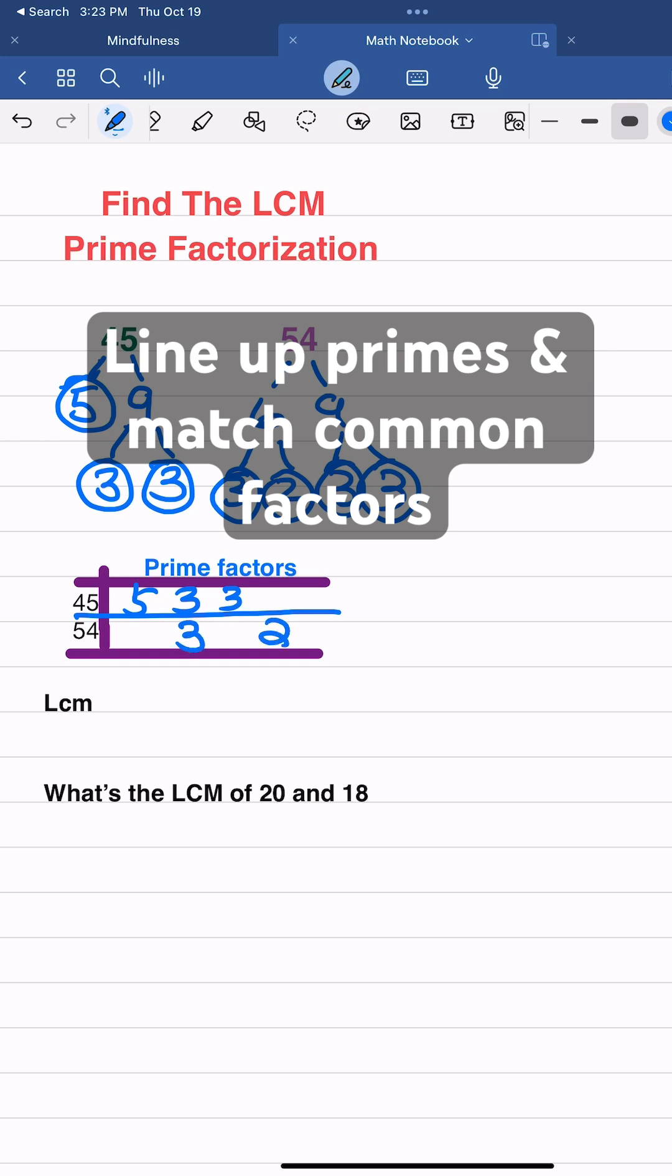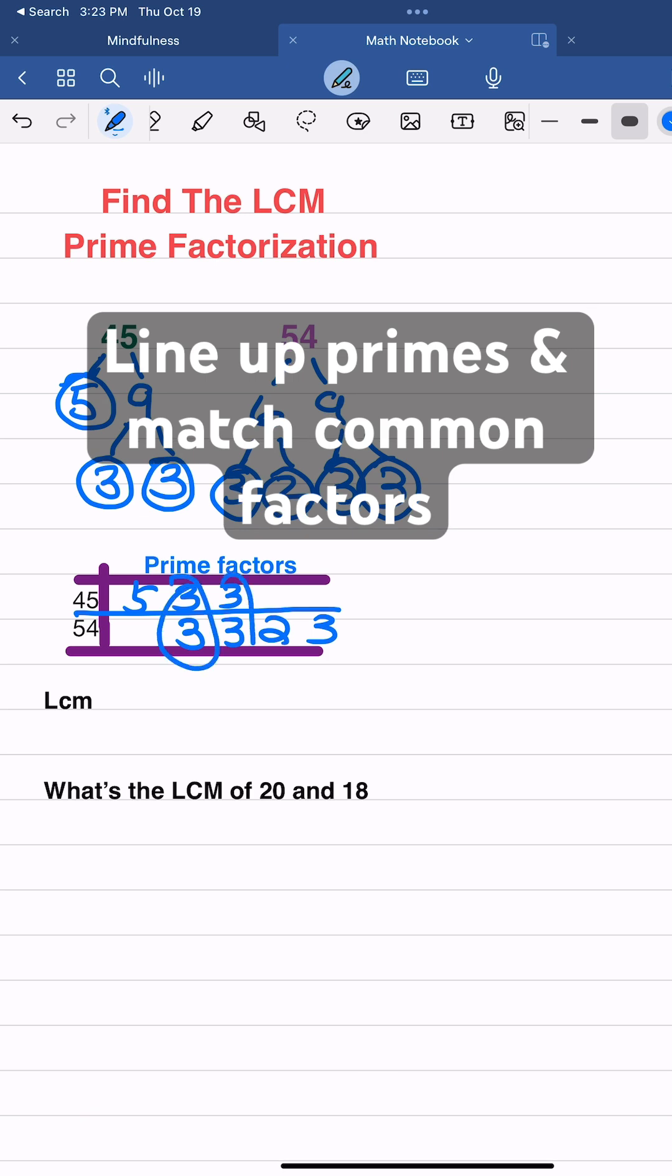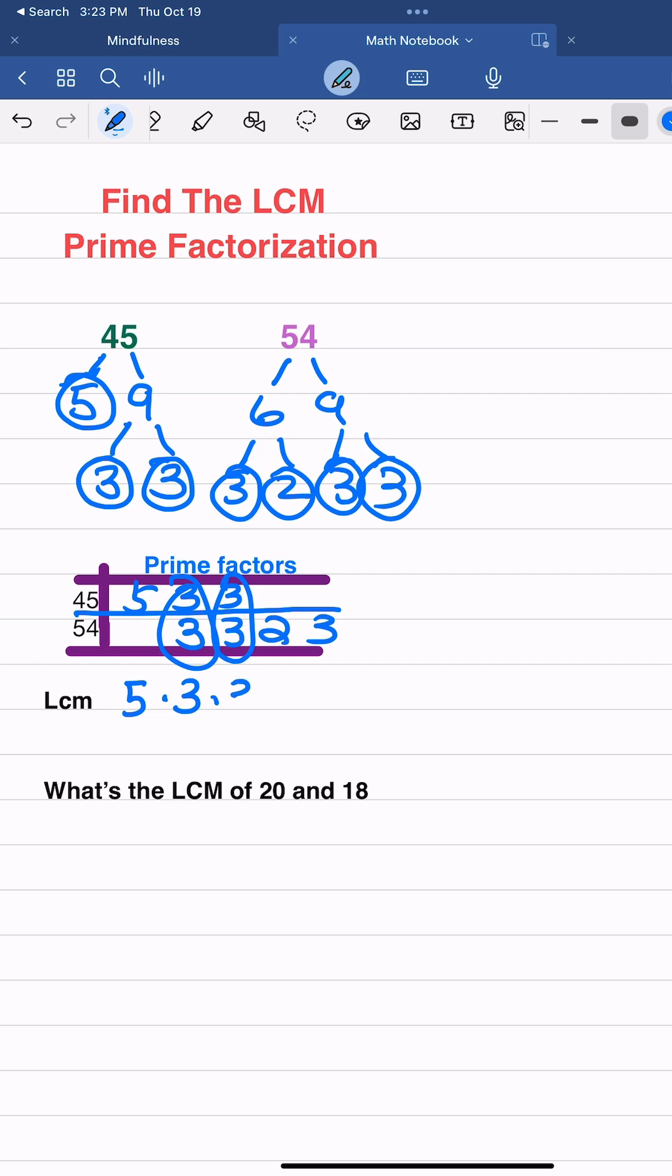What I do, the next step is to line up the primes and match those common factors. This is a really important step. I want to make sure I'm matching, so they have two 3s that are shared here, 54 and 45.